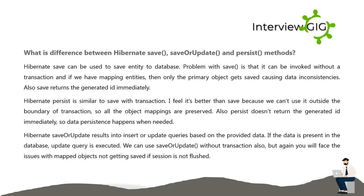What is the difference between Hibernate save, saveOrUpdate, and persist methods? Hibernate save() can be used to save an entity to the database. The problem with save() is that it can be invoked without a transaction and if we have mapping entities, only the primary object gets saved, causing data inconsistencies. Also, save() returns the generated ID immediately. Hibernate persist() is similar to save() with a transaction — it's better because it can't be used outside the boundary of a transaction, so all object mappings are preserved. Also, persist() doesn't return the generated ID immediately, so data persistence happens when needed.